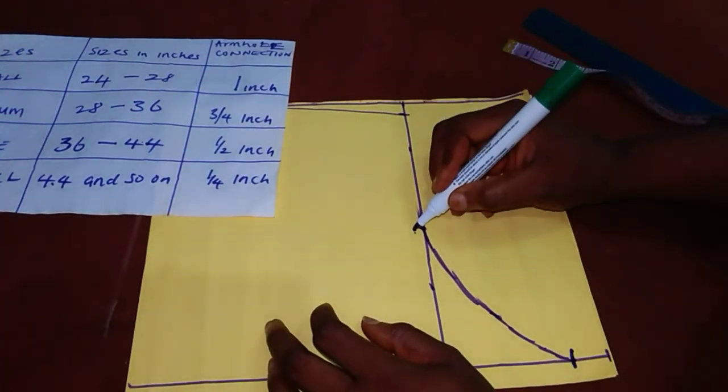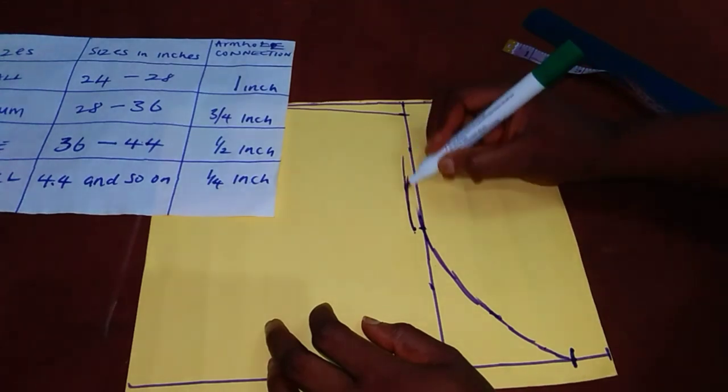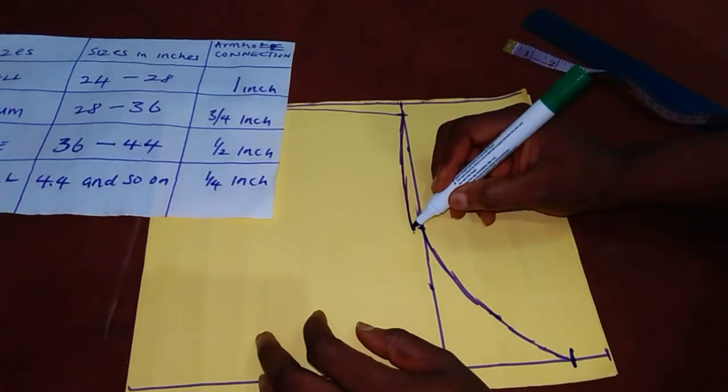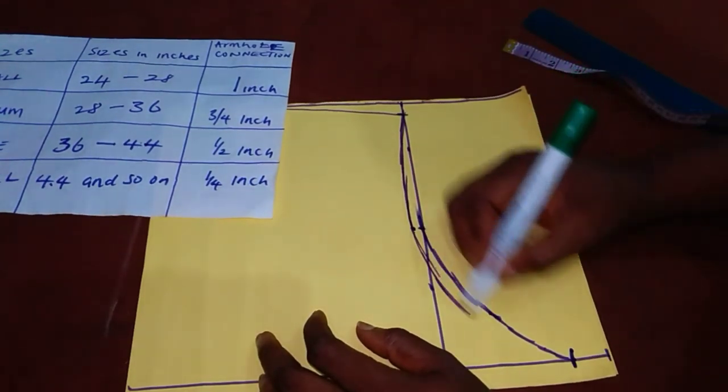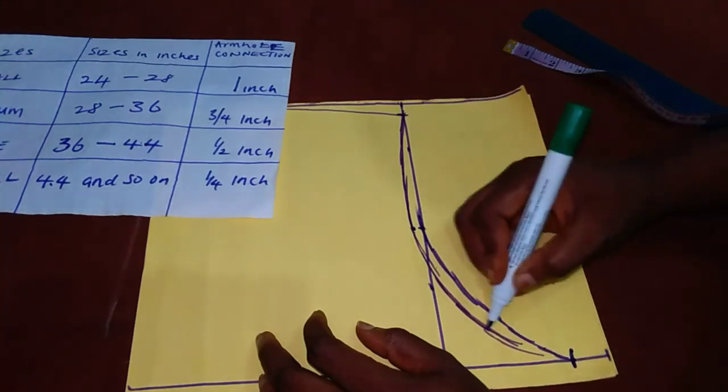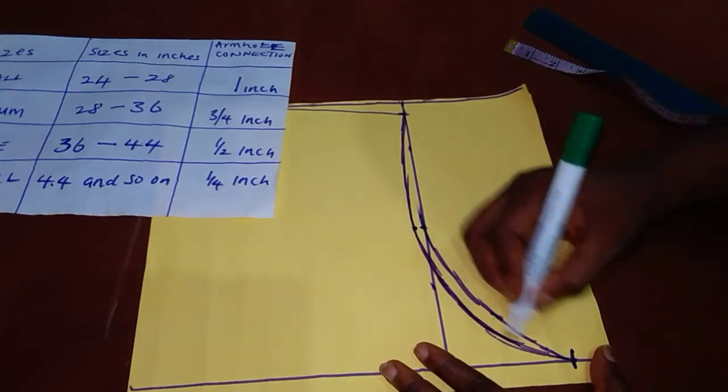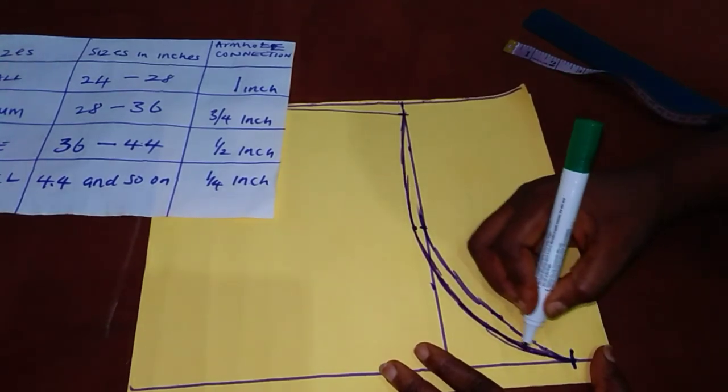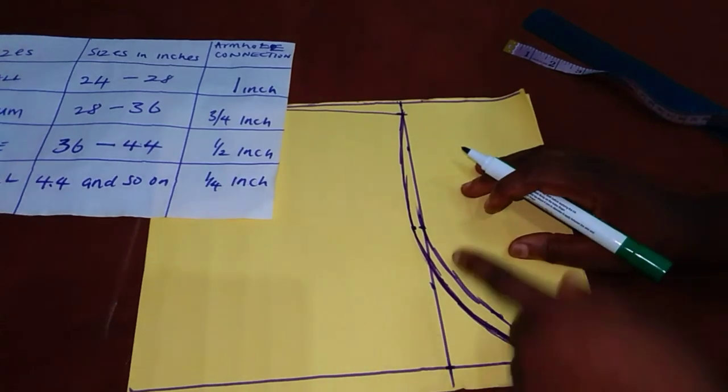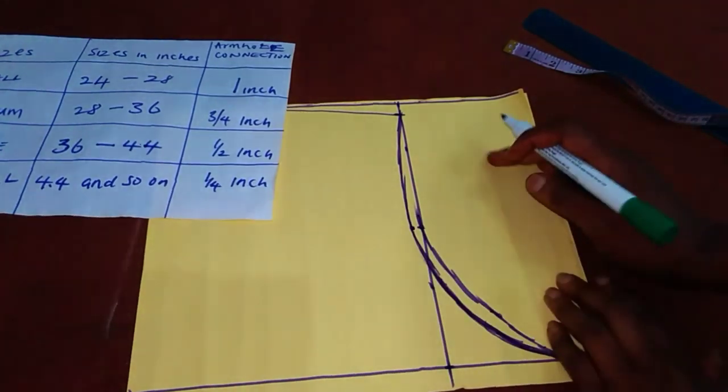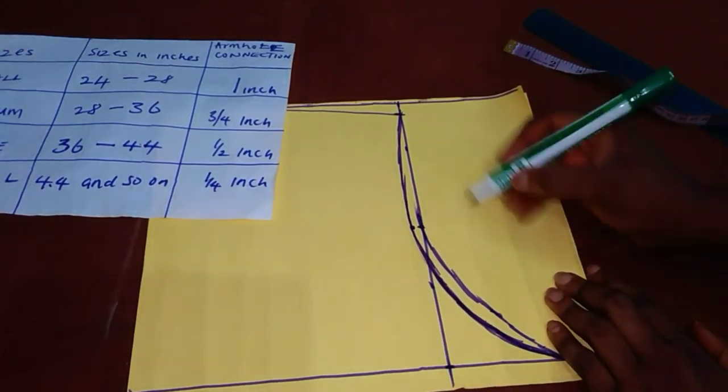Now, since we said that for the armhole connection for the front, it is 1 over 4 inches. All you need to do is to go in by quarter of an inch here at the midpoint. This is quarter of an inch connected to the slope here and down to the armhole. Sorry, to the bust measurement also. This is what I mean. I'm sorry, I don't have a French curve, but I just needed to clear somebody on this. So now this is the front armhole and this is the back armhole.